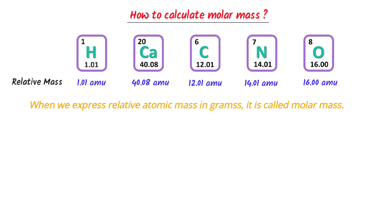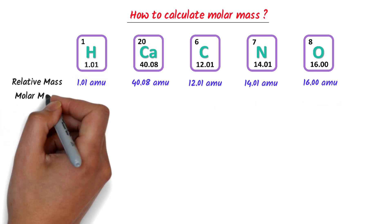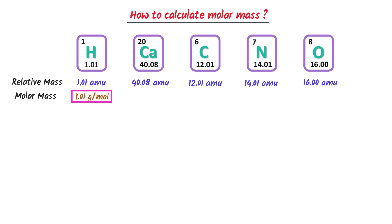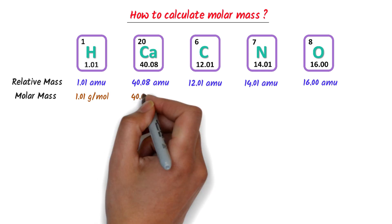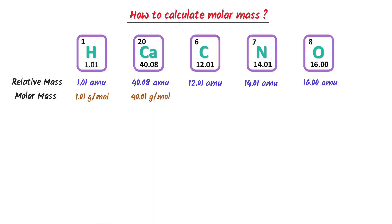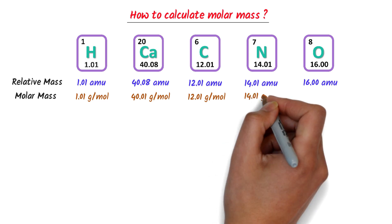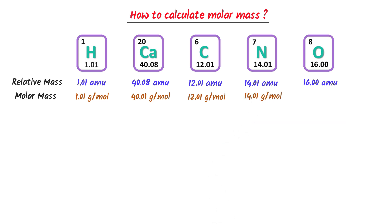For example, the relative atomic mass of hydrogen is 1.01 amu. When I write hydrogen is equal to 1.01 gram per mole, it is known as the molar mass of hydrogen. So I write 40.08 gram per mole, 12.01 gram per mole, 14.01 gram per mole, and 16.00 gram per mole. Now all these masses are relative atomic masses expressed as molar masses.